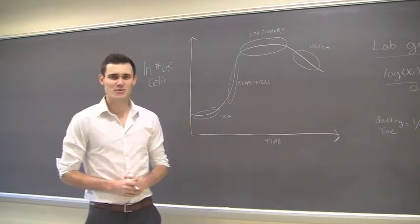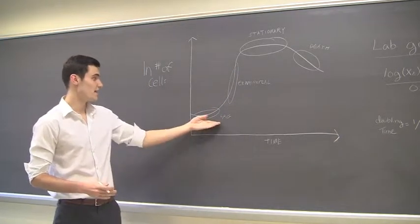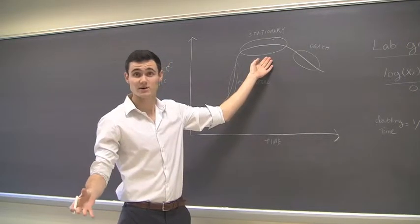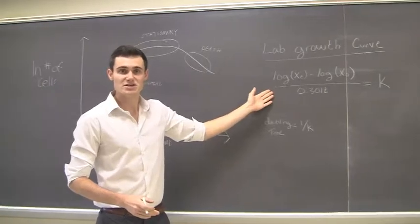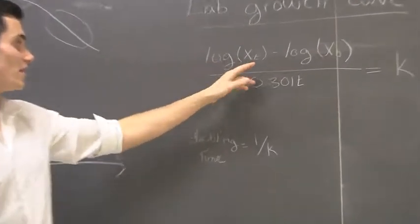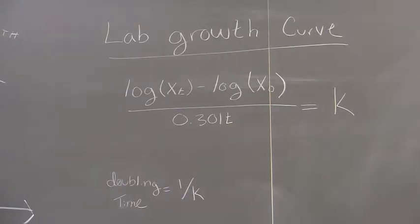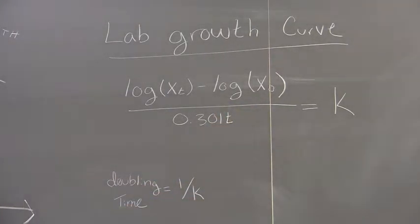Hello, class. Today we will be talking about the growth curve. Now, you've seen the four phases here. The lag phase, exponential or the growth phase we'll be focusing on, the stationary phase where the cells reach equilibrium, and then the death phase. So, you've seen this equation many times. You have log of a composition at some point minus the log of the initial composition of cells, divided by some factor times the time is equal to your k value.